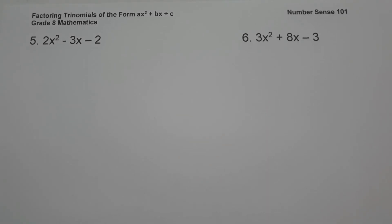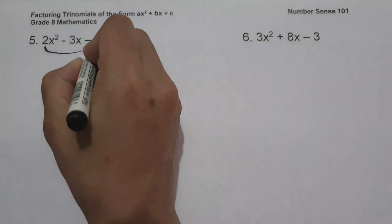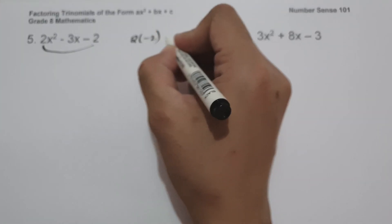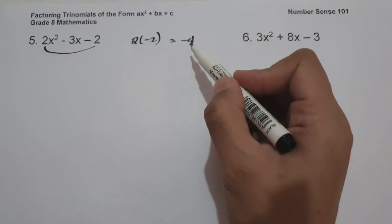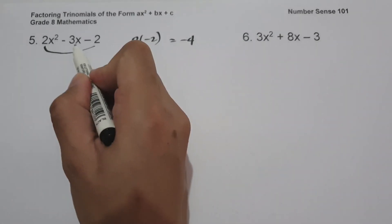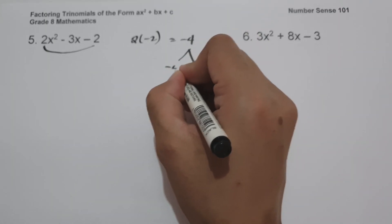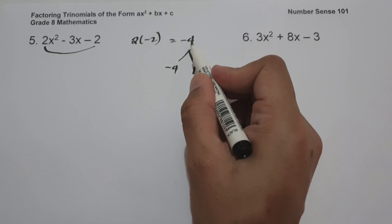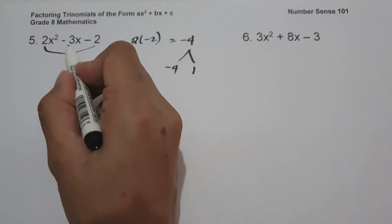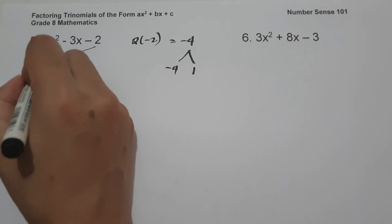On example number 5, we have 2x squared minus 3x minus 2. How can we find the factors when the value of a is not equal to 1? I'm going to show you two different ways. The first step is to multiply the value of a and the constant: 2 times negative 2 is negative 4. What two numbers multiply to negative 4 and add to negative 3? That is negative 4 and positive 1. Negative 4 times 1 is negative 4, and negative 4 plus 1 is negative 3.